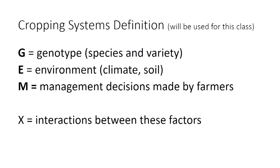Then we have environment — basically the things a farmer doesn't control. That would be things like climate, and also things like the soil. A farmer didn't have anything to do with the soil texture, topography, depth, bedrock, natural soil fertility, cation exchange capacity, etc. I'm expecting you, having taken a soil science course, to understand the basic biological, chemical, and physical soil properties that are important for cropping systems. The vast majority of these are not under control of the farmer. Environment is what a farmer doesn't control.